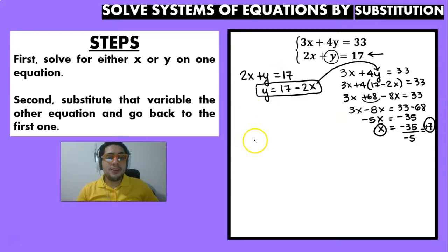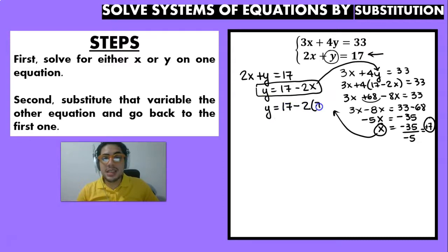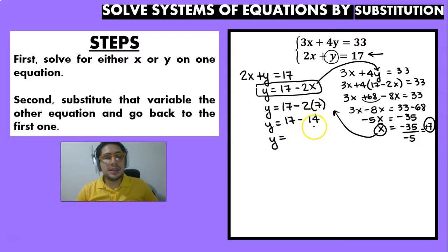Now that we have found x, we go back to our first equation: y equals 17 minus 2 times 7. So y equals 17 minus 14, which gives us y equals 3.